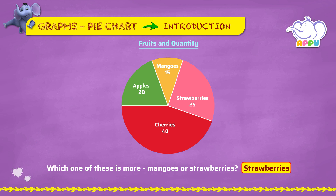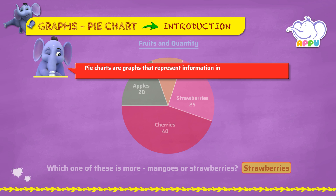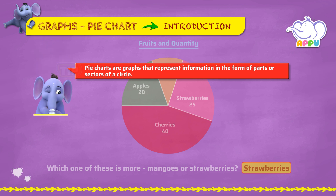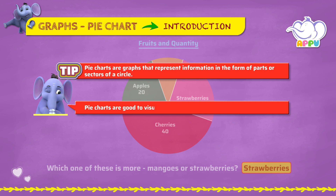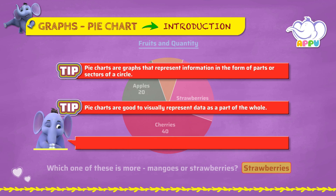Pie charts are one of the different ways of number representation. Pie charts are graphs that represent information in the form of parts or sectors of a circle. Pie charts are good to visually represent data as a part of the whole. Pie charts help in finding maximum, minimum, and for comparing quantities.